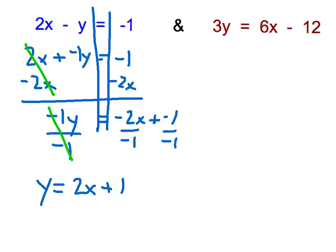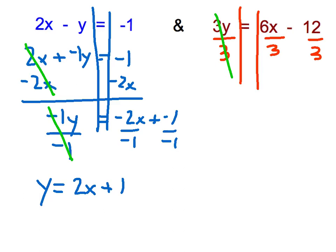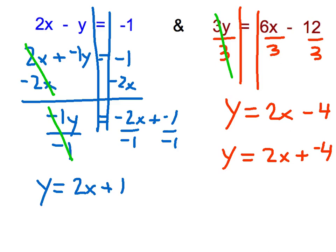Moving to the other equation in the system — it's also not in slope-intercept form, so I need to do an inverse operation. I need to get rid of that 3 next to the y; since it means multiply, my inverse operation is divide by 3. All terms on the other side also get divided by 3, the 3s cancel, and rewriting gives me y equals 2x minus 4 — or y equals 2x plus negative 4, which means the same thing.